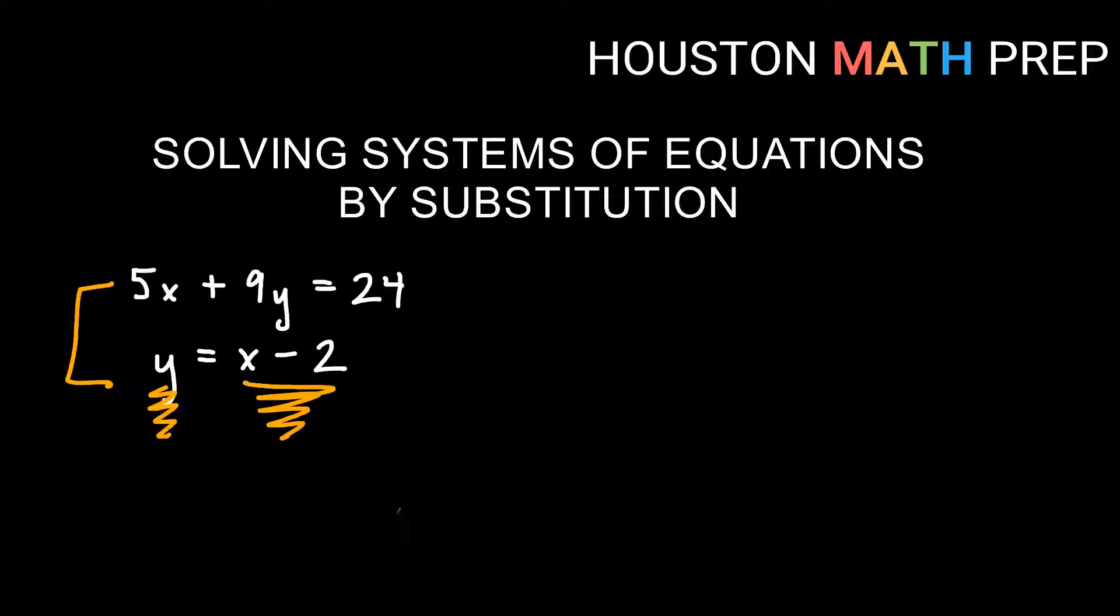So what I can do is I can replace y with x minus 2. Why would I want to do that? Well the reason is if I take x minus 2 and I put it in for y up here in the other equation, that will give me an equation on the top that only has x's in it. That'll allow me to solve for x. So let's do that and see what we get.